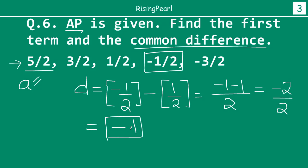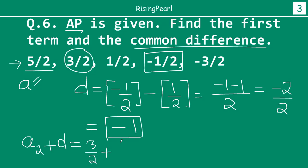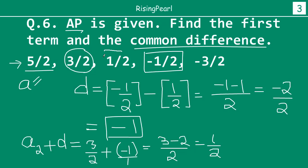You can actually test this out very simply by taking any of the other values. For example, if I take the second term and add the common difference to it, am I getting the third term? That is a good way to verify that your answer is correct. My second term is 3 by 2, so 3 by 2 plus common difference minus 1: the denominator is 2, and 2 times minus 1 is minus 2, so 3 minus 2 is 1 by 2. Is this the same as the third term? Indeed it is — the third term is 1 by 2. So our answer, minus 1, is correct for the common difference.